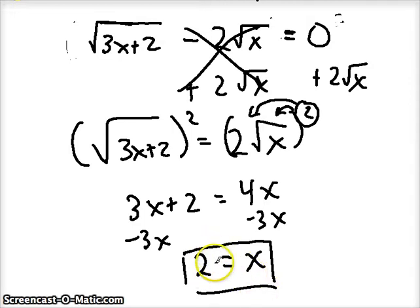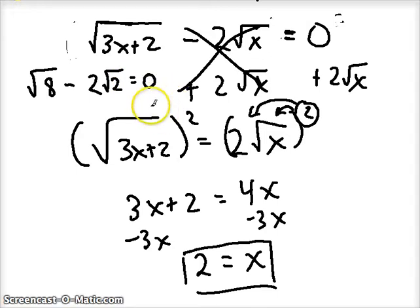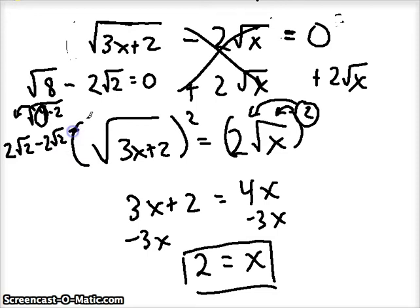If I plug it back in to check, 3 times 2 instead of x here is 6. 6 plus 2 is the square root of 8. Over here, if I plug in 2, then I get 2 times the square root of 2. So you might be thinking this isn't going to work out, but if we simplify the square root of 8, if we factor that down to 4 times 2 and take out the square root of 4, then we get 2 times the square root of 2. And if we subtract 2 times the square root of 2, then that does in fact equal 0, and it checks out. Alright, let's do another example.